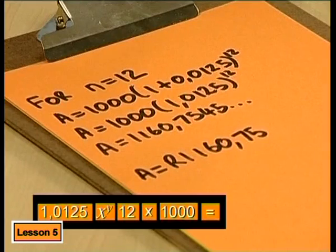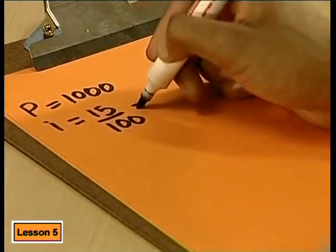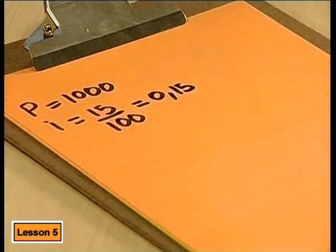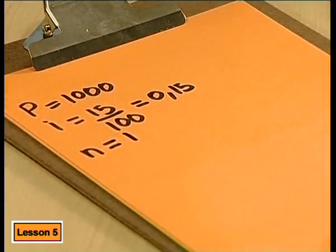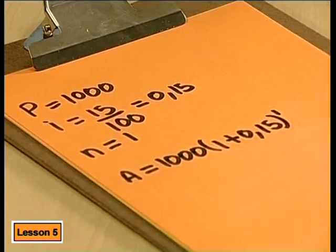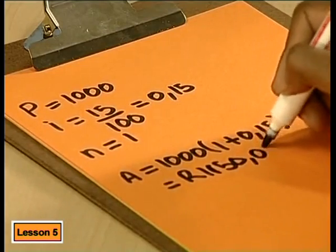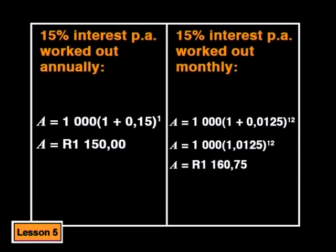That's only if you don't withdraw anything during the year. But do you think we'll get the same answer if we work out yearly interest? If we use the same 15% rate but calculate interest only once in the year, will we get the same answer? Working it out: P is 1,000, the yearly rate is 0.15, and N is 1. Substituting gives 1,150 rand. This is less than when we calculated the interest each month, even though the time and the rates are the same.